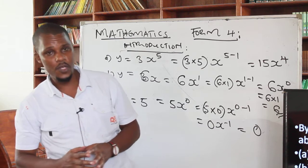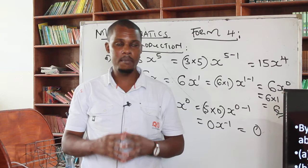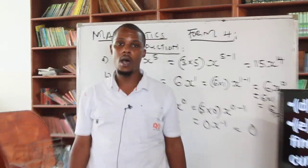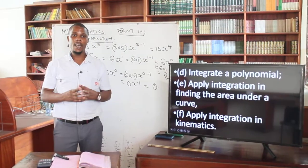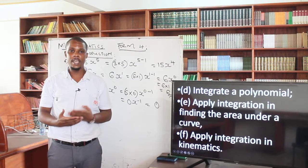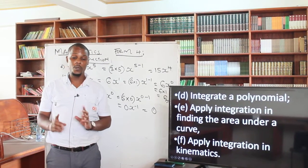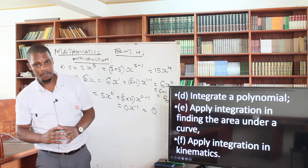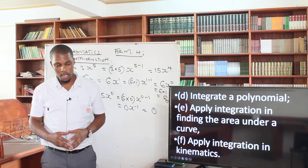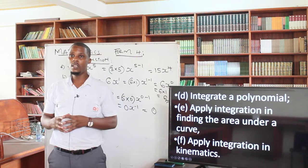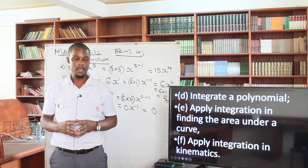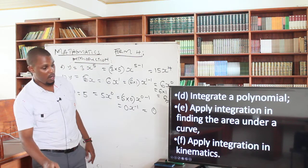Part 3: you are supposed to relate integration notation to the sum of the area of the trapezium under the curve. We will also be focusing on integrating polynomials. Then objective e is to apply integration in finding the area under the curve, relating it to what we did when finding maximum and minimum areas. Objective f is to apply integration in kinematics — just as we applied differentiation in velocity, acceleration, and displacement, we will apply integration in the subtopic known as kinematics.